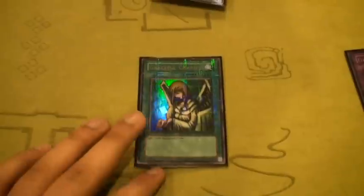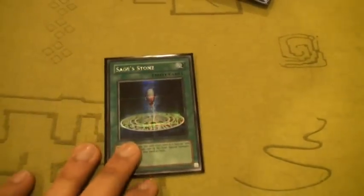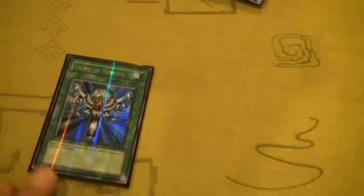Graceful Charity, parallel rare. Have a Harpy's Feather Duster, Delinquent Duo, Pot of Greed, Sage's Stone, and a Monster Reborn, again parallel rare.